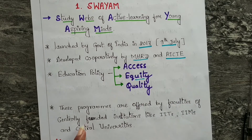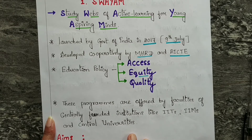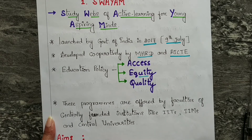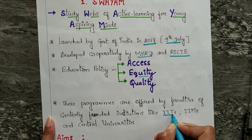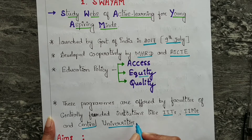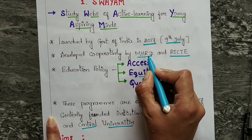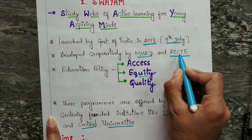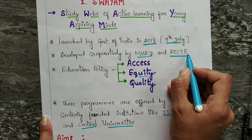These programs are offered by faculties of centrally funded institutions like IITs, IIMs, and central universities. MHRD stands for Ministry of Human Resource Development and AICTE stands for All India Council of Technical Education.